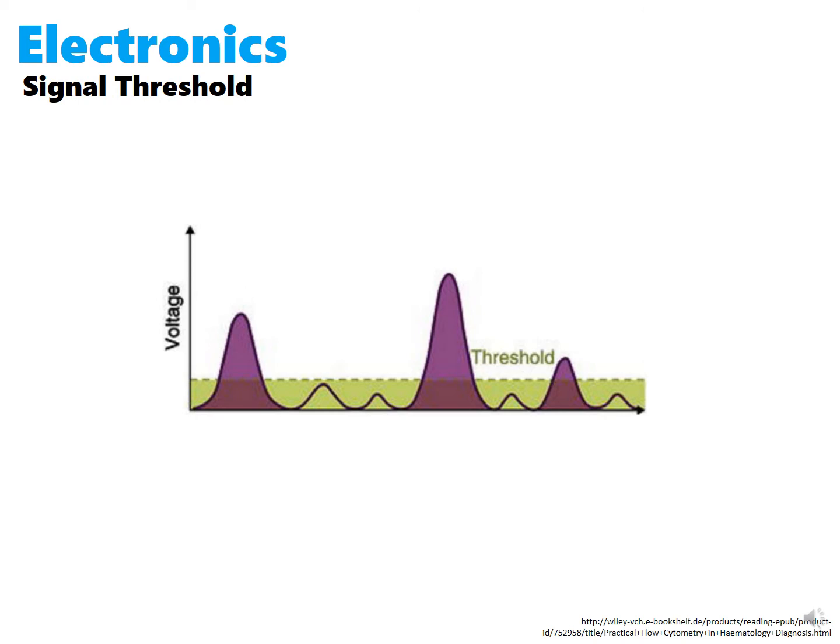These voltage pulses occur not only for cells but also for any particulate debris that pass through the laser. In order to avoid interference from any debris, we need to have a signal threshold. Signals below the threshold are not processed. However, one must be careful because if the signal threshold is too low, we'll have extra noise added into our signal. But if the signal threshold is too high, we might miss the cells of interest.